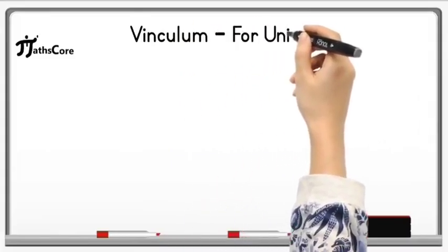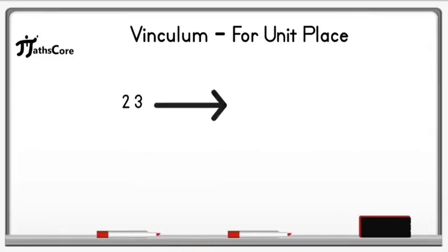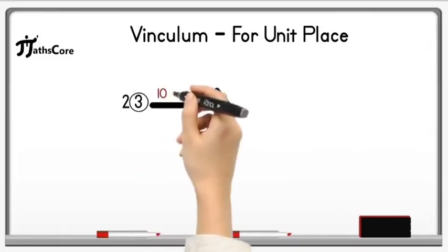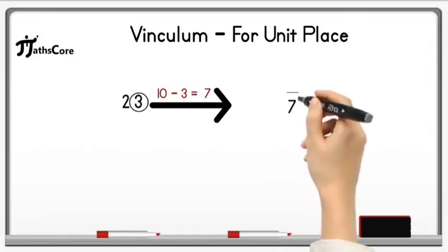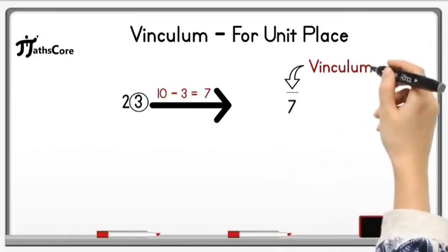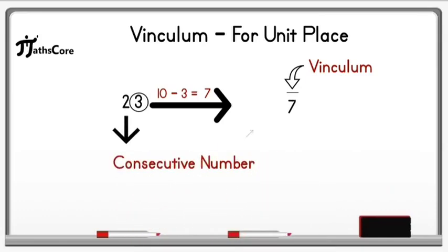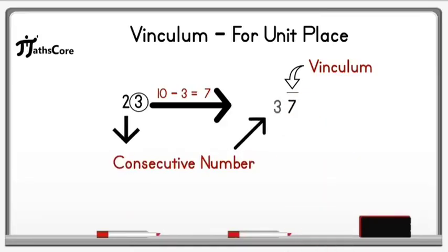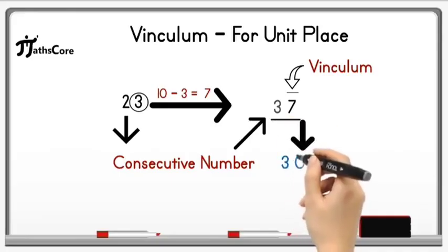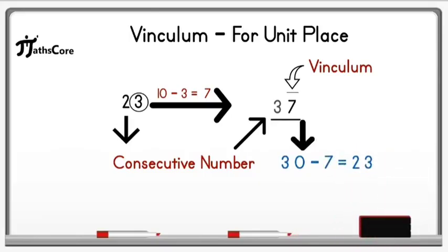Now let's take one more example for the unit place. The example is 23. Subtract the unit place digit 3 from 10. So 10 minus 3 is equal to 7. Write 7 here and place an overline on it, which is vinculum. The consecutive number of 2 is 3, so write 3 before 7. The meaning of this is: subtract unit place digit 7 from the tens place digit — place value of 3 is 30, so 30 minus 7 equals 23, which is the given number.